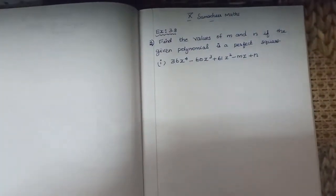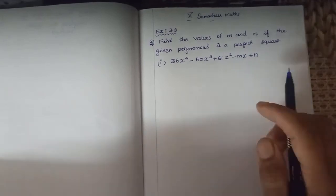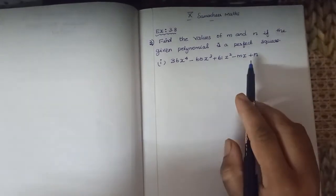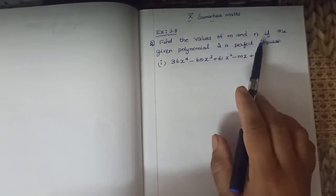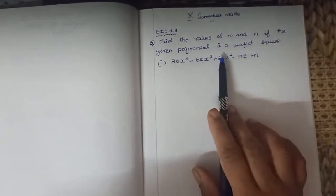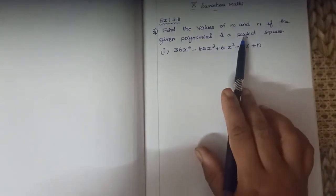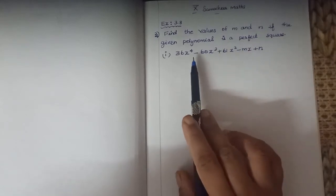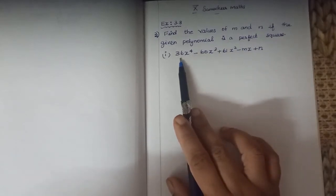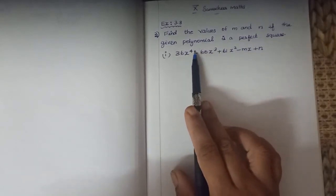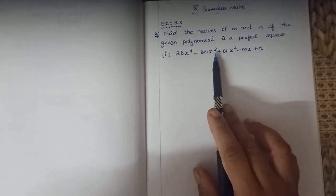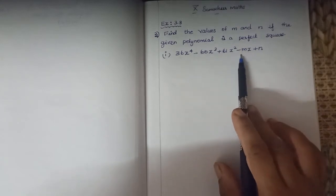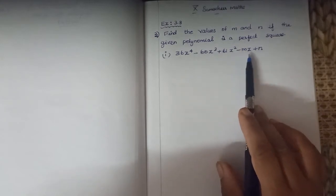Find the values of m and n if the given polynomial is a perfect square. The given polynomial is 36x to the power 4 minus 60x cube plus 61x square minus mx plus n.